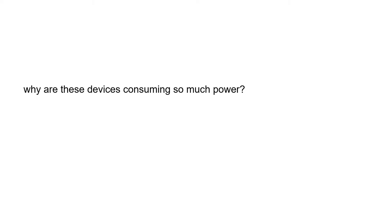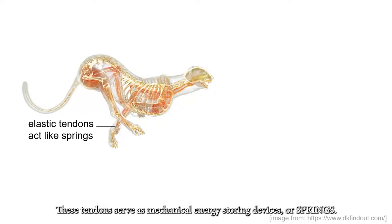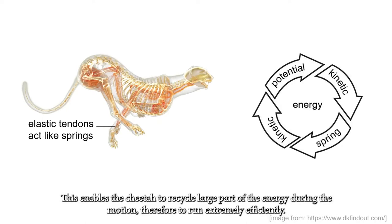So why are these devices consuming so much power? Or maybe better to ask, how does an actual cheetah run so efficiently? If we look closer at the cheetah's anatomy, we find that there are elastic tendons connecting the muscles to the bones. These tendons serve as mechanical energy-storing devices, or springs. This enables the cheetah to recycle large part of the energy during the motion, therefore to run extremely efficiently.